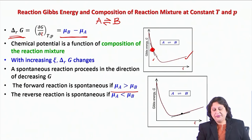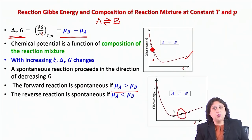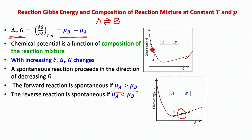If I think about the other extreme where the slope is positive, the slope is positive when μB is greater than μA. Under such a condition, the forward reaction would not be spontaneous — the Gibbs free energy would increase as A converts more to B. Therefore, the decrease in Gibbs free energy is associated with B being converted to A, and so the reverse reaction is spontaneous.